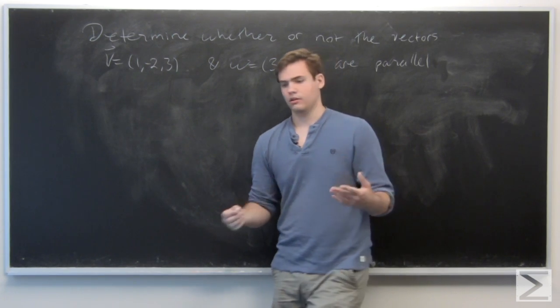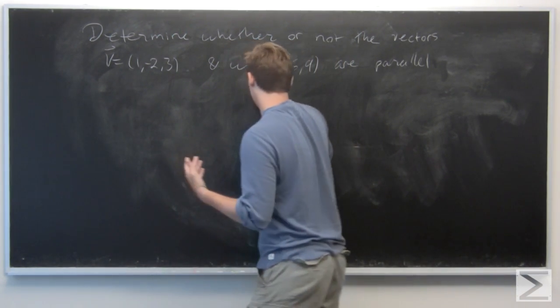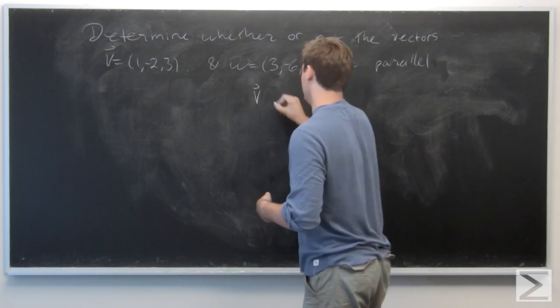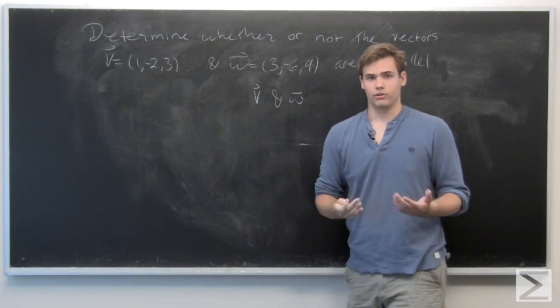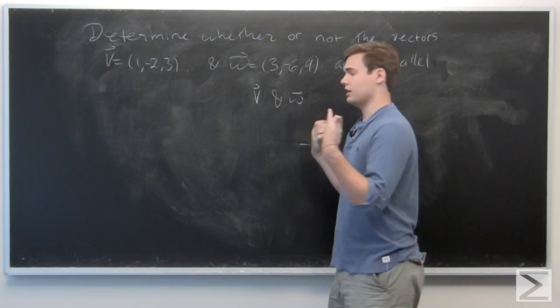So that just means that given vectors v and w, they're parallel if there exists some scalar, say lambda,